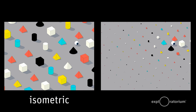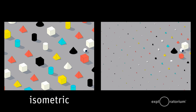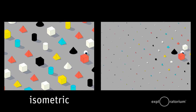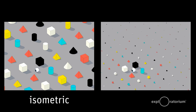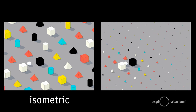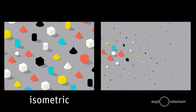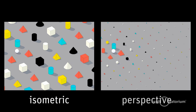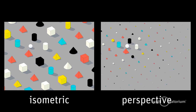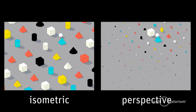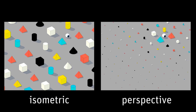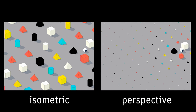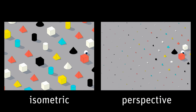We understand implicitly that the world is as we see it in what I'm going to call the isometric view. But our visual experience of the world is what we call the perspective view. And we're so used to seeing things in perspective that we rarely notice how preposterously distorted our visual experience is.